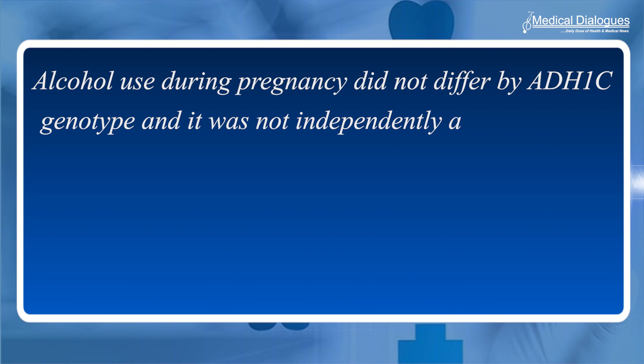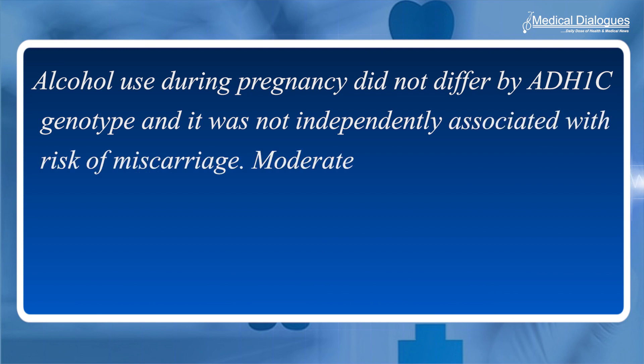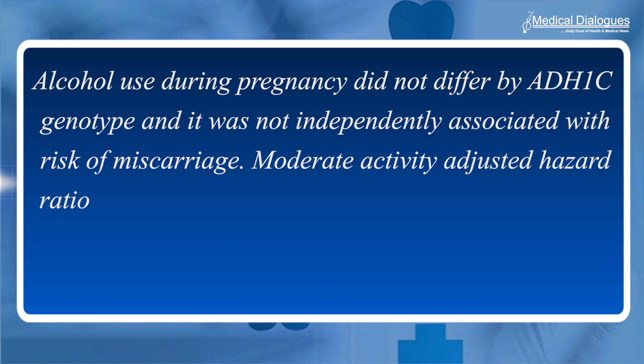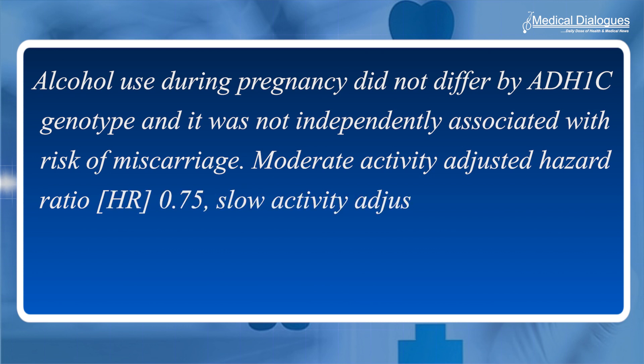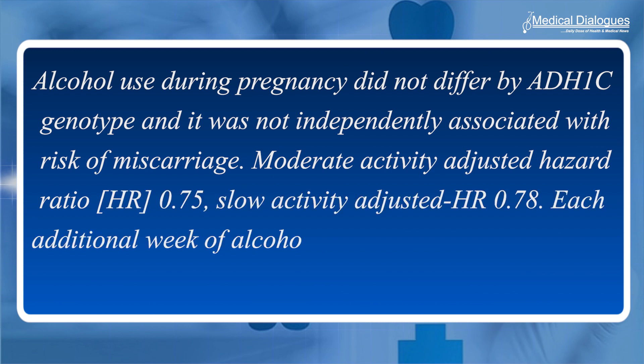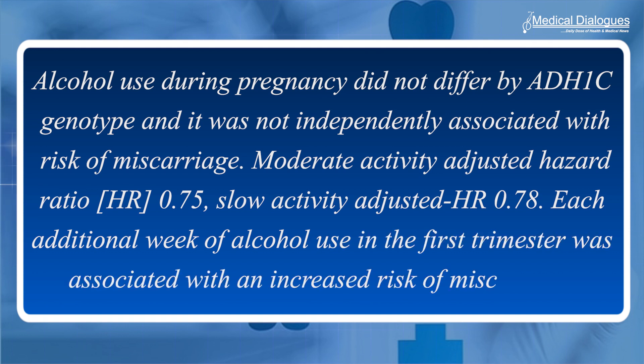Genotype was not independently associated with risk of miscarriage, with moderate activity adjusted hazards ratio of 0.75 and slow activity adjusted hazards ratio of 0.78. Each additional week of alcohol use in the first trimester was associated with an increased risk of miscarriage. Researchers concluded that the increased risk of miscarriage conferred by each additional week of alcohol exposure was not modified by alcohol metabolism as indicated by ADH1C genotype.